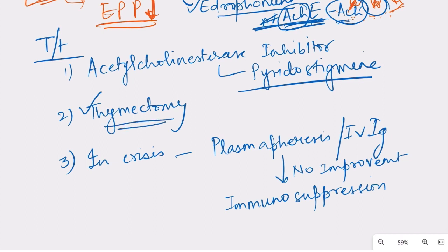The rationale for thymectomy is that the antibodies — nAChR antibodies and anti-MuSK antibodies — are T-cell dependent in their action. By performing thymectomy and removing these T-cells, the antibody response is prevented. This makes thymectomy very useful in myasthenia gravis.